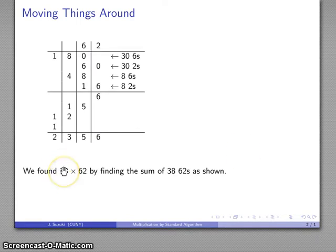Well, literally, this is the sum of 38 62s. And so what I did is I found 30 sixes, 30 62s, 8 62s, altogether 38 62s.